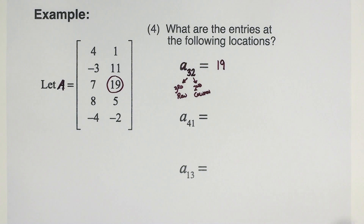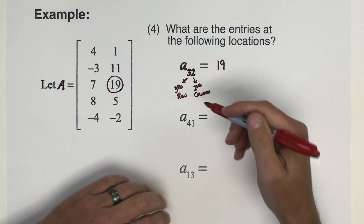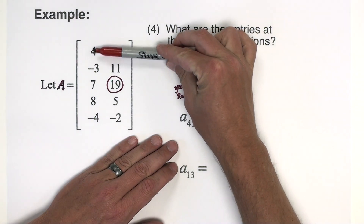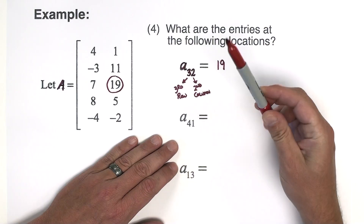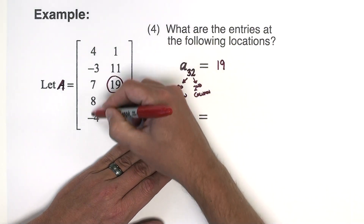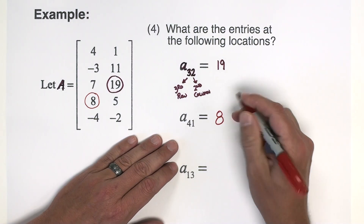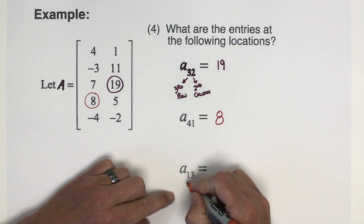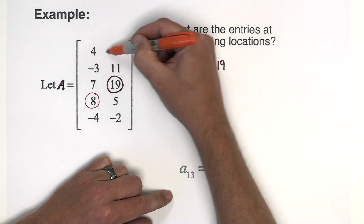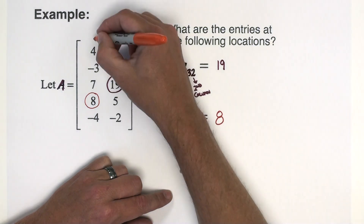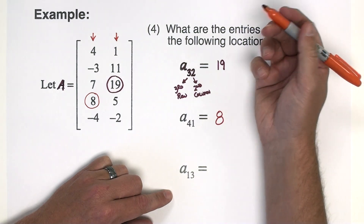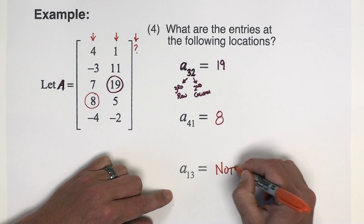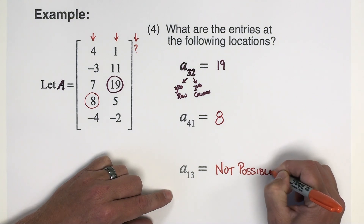For the next entry, A sub 41 is the fourth row, first column. Counting down one, two, three, four rows — I'm looking at either the eight or the five. I want the number in the first column, which is the eight. Finally, A sub 13 means row one, column three. But if you look at the columns, there's only two columns — there is no third column. So the number in the first row, third column is not possible; there is no number in that position.